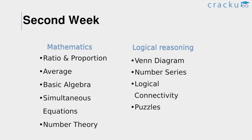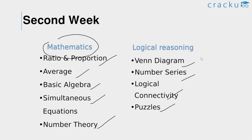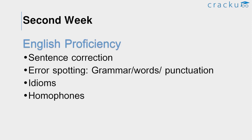In the second week, having covered the top topics in Mathematics and Logical Reasoning, focus on moderate topics like ratios and proportions, averages, basic algebra, simultaneous equations, and number theory. For Logical Reasoning, cover Venn diagrams, number series, logical connectivity, and puzzles. Try to solve at least two questions from each topic. For English Proficiency, cover moderate topics such as sentence corrections, spot the error, idioms, and homophones — try to solve at least five questions from each topic.